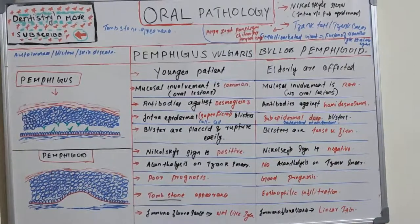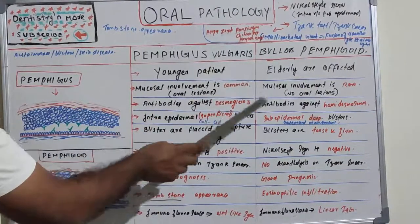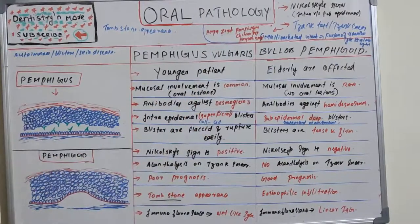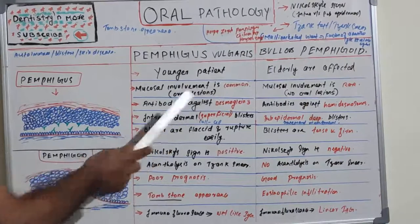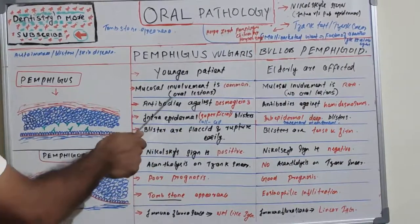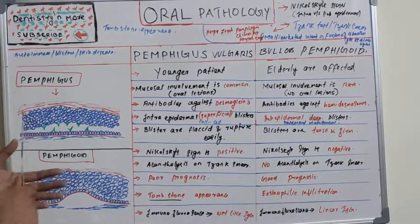So pemphigus forms within the epidermis and pemphigoid forms underneath the epidermis, between the basement membrane and the epithelium. Now, pemphigus vulgaris is more common in younger patients, whereas bullous pemphigoid has a higher incidence in the elder age group.